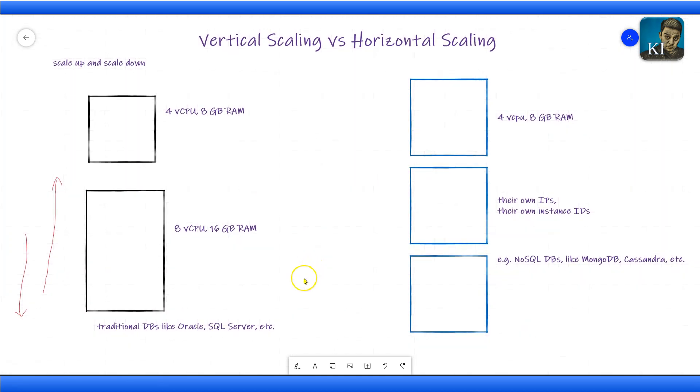In case of horizontal scaling, the terms are scale out and scale in. Scale out means adding more instances, and removing the instances is called scale in.